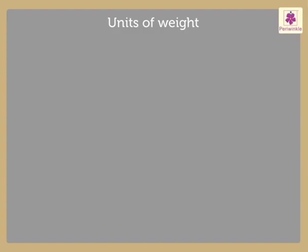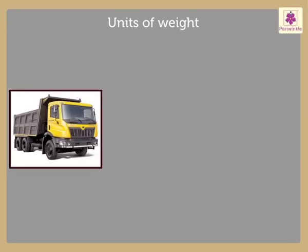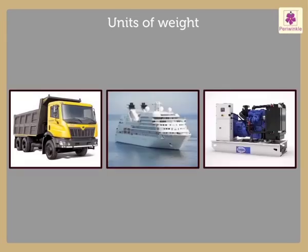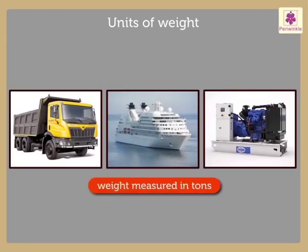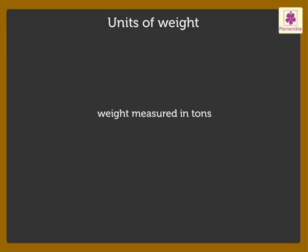Weights of heavy objects such as a truck, a ship, or machinery are measured in tons. One ton is equal to 1000 kilograms.